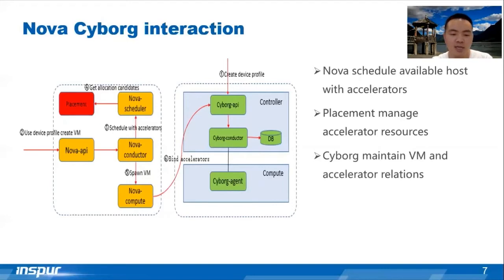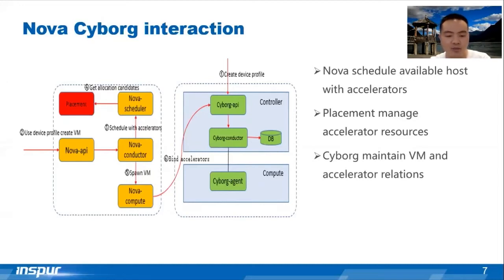Fourthly, Nova's scheduler gets location candidates from placement and filters available hosts. Then Nova Compute spawns the server with accelerators. Finally, CYBOG API maintains the relations between the server and accelerators. Through these steps, we can boot a server with an accelerator device profile through Nova. If you want to test this feature, you can deploy the Ussuri release — I think it will be a pleasant experience.